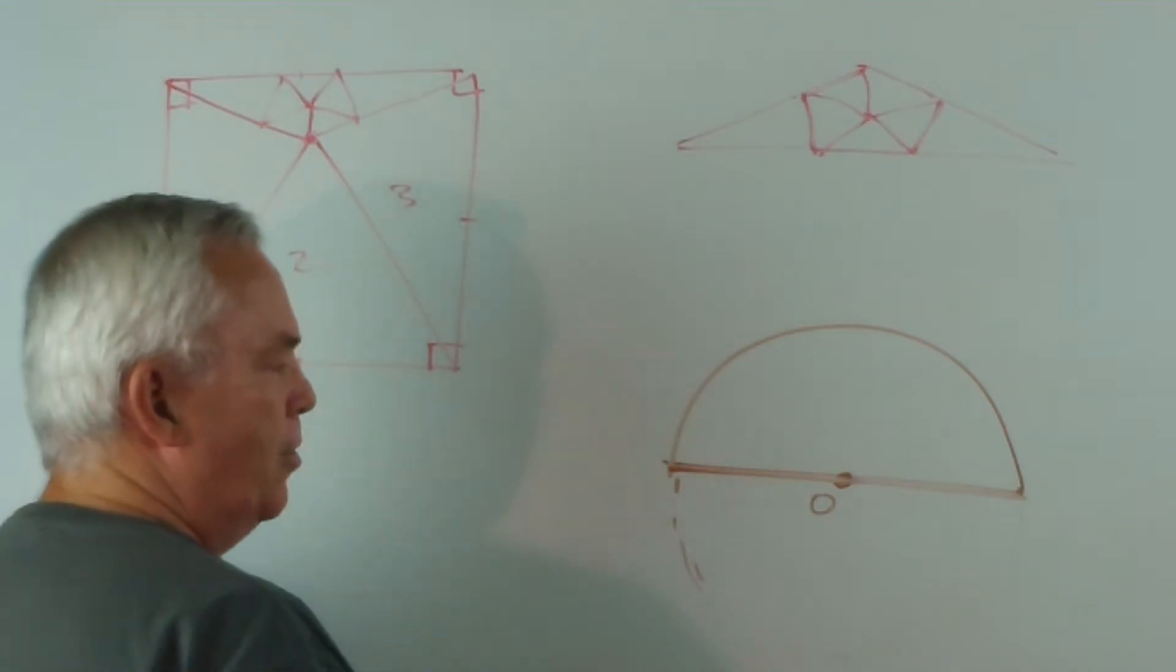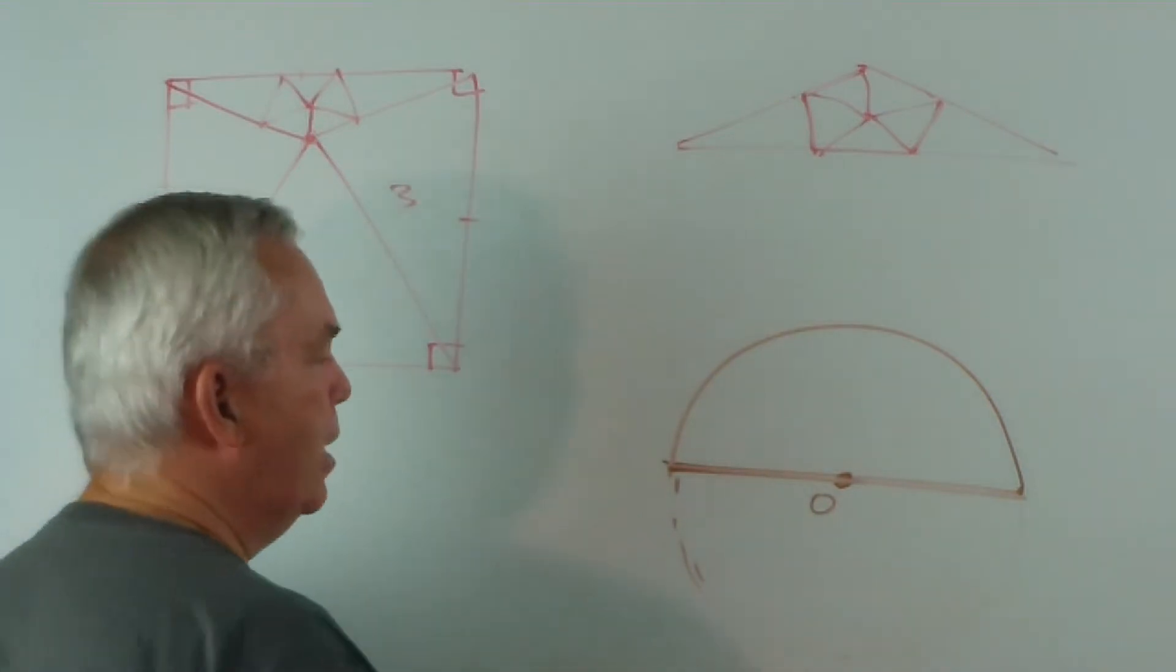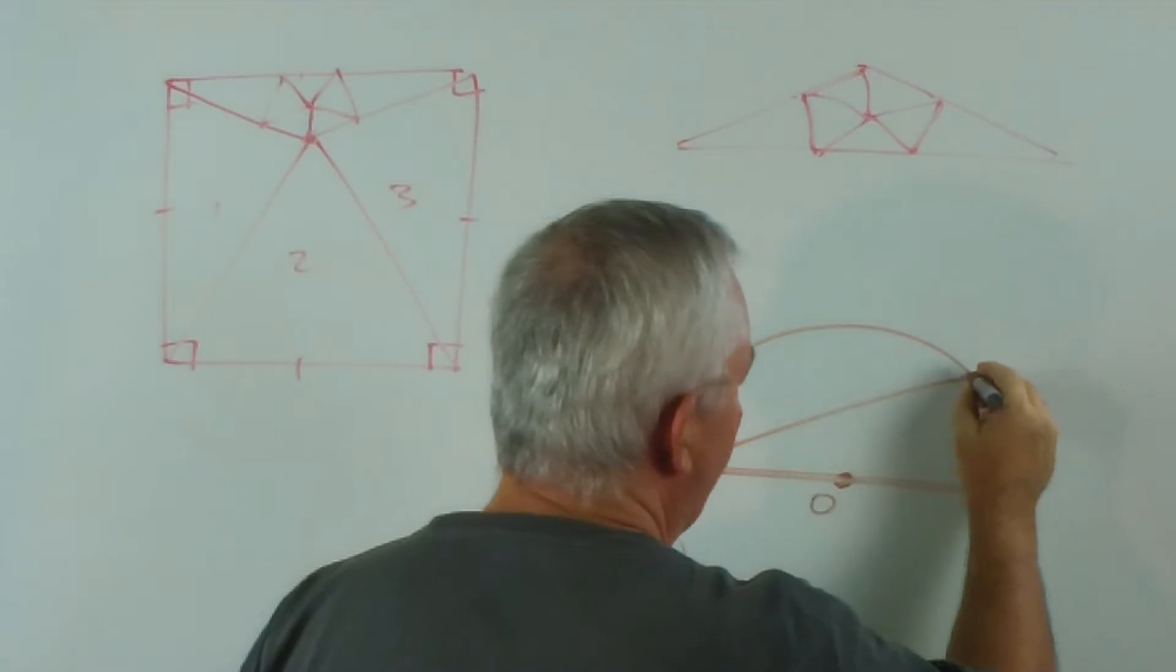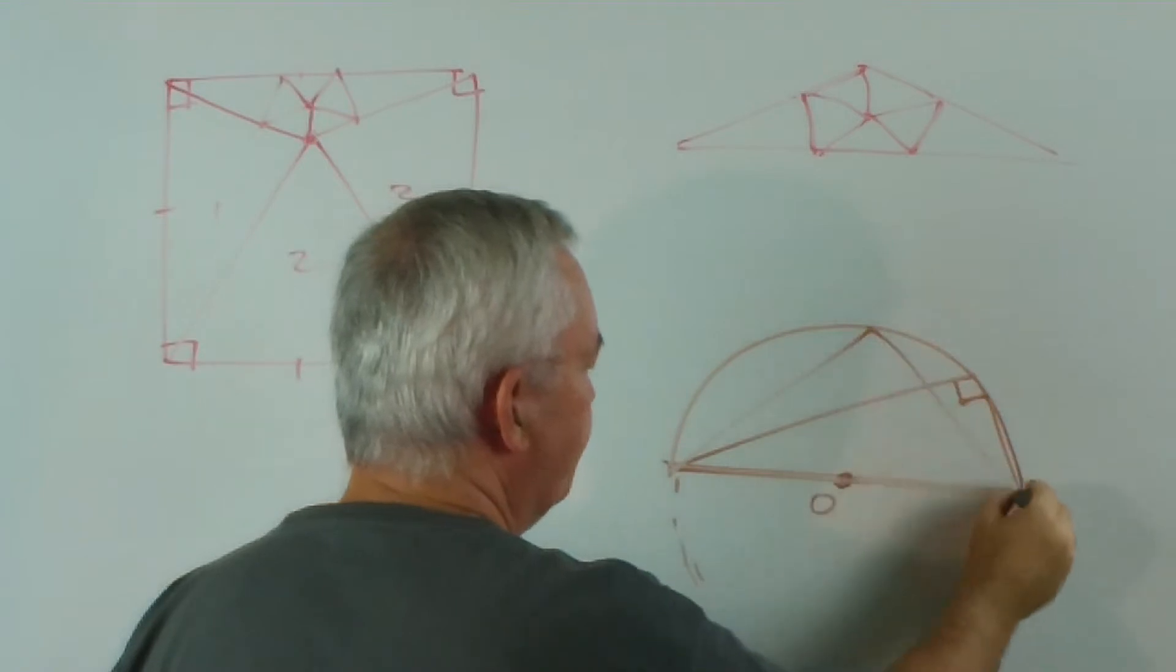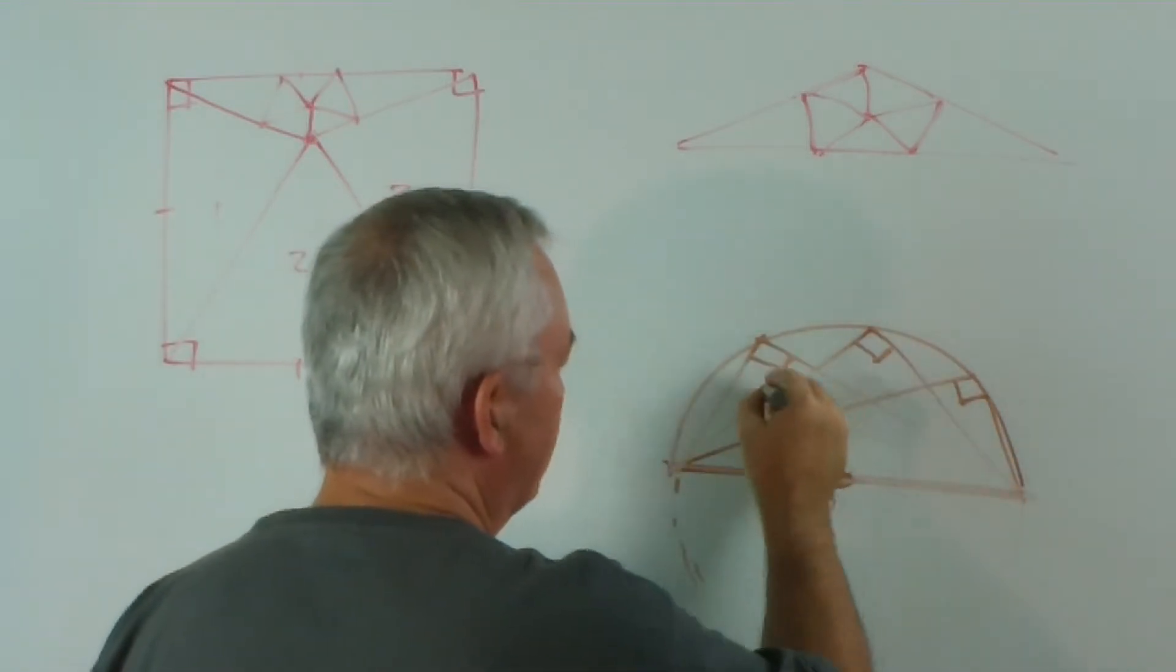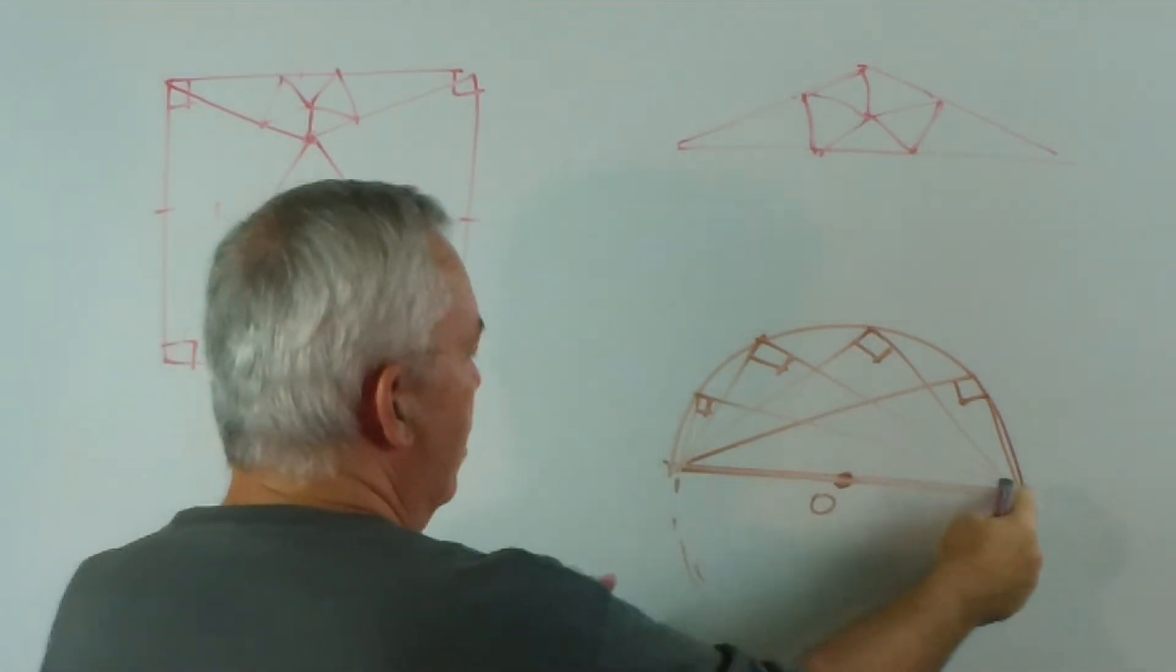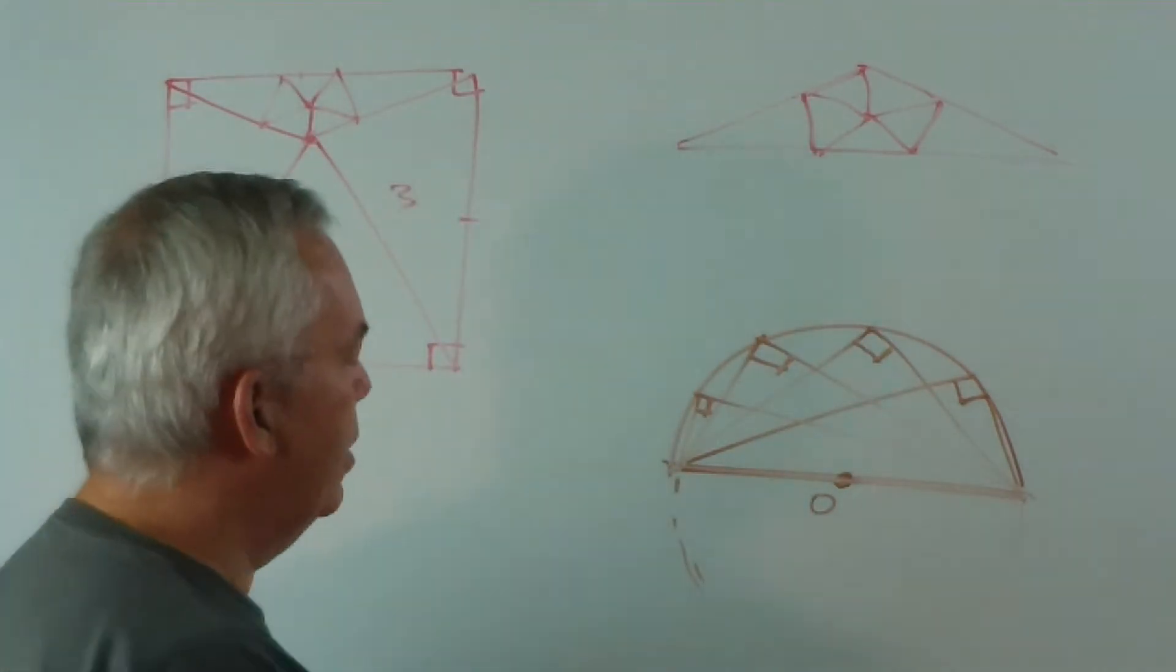There's a rule in geometry, which I trust you learn at some point, and hopefully you already know, that says this: that any angle that you draw in a semicircle is a right angle, any angle at all, where the diameter subtends an angle at the circumference, at a point on the circumference.